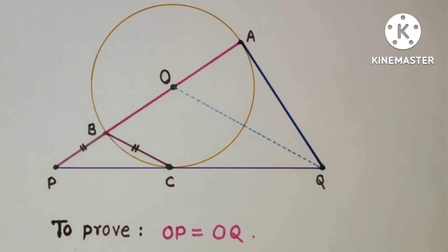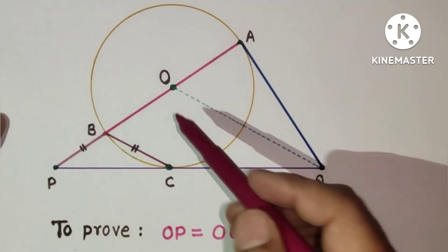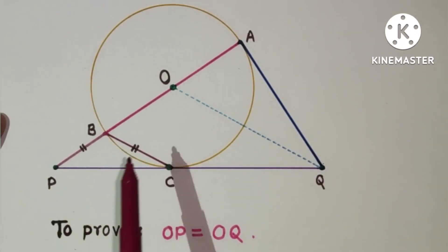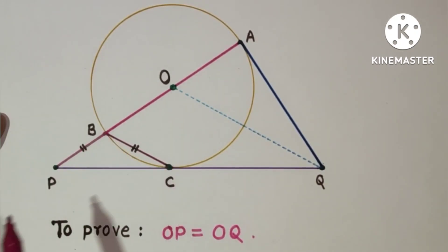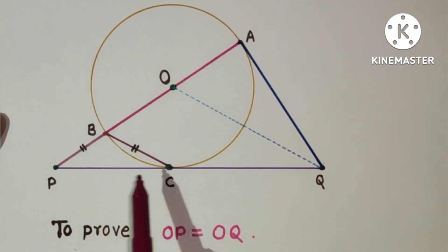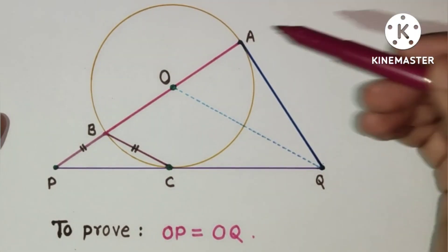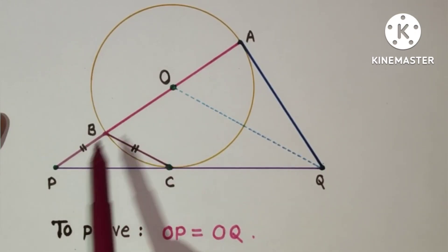Hi everyone, welcome. Today we are going to do a 10th grade geometry problem on the circle topic. This is an interesting question with more than three solutions, but we will discuss three solutions only. In the diagram given, this is a circle with center O, AB is a diameter, AB extended to P such that BP equals BC, where C is the point of contact where PQ touches the circle. QA is also a tangent which touches the circle at point A. We have to prove that OP equals OQ.